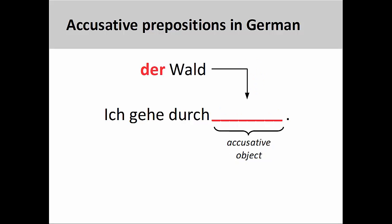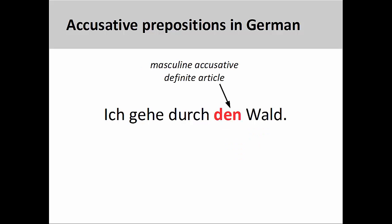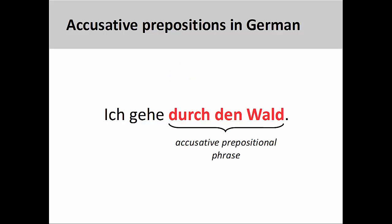You will notice, however, that the object of the preposition is in the accusative case. This brings us to an important rule about accusative prepositions: any noun that is the object of the preposition must be in the accusative case. Here, once I make 'der Wald,' which is in the nominative case, the object of the accusative preposition, the masculine definite article must be changed into its accusative form to show that it is the object of the preposition. Furthermore, everything inside of the prepositional phrase, between the preposition and its object, must also be in the accusative case.